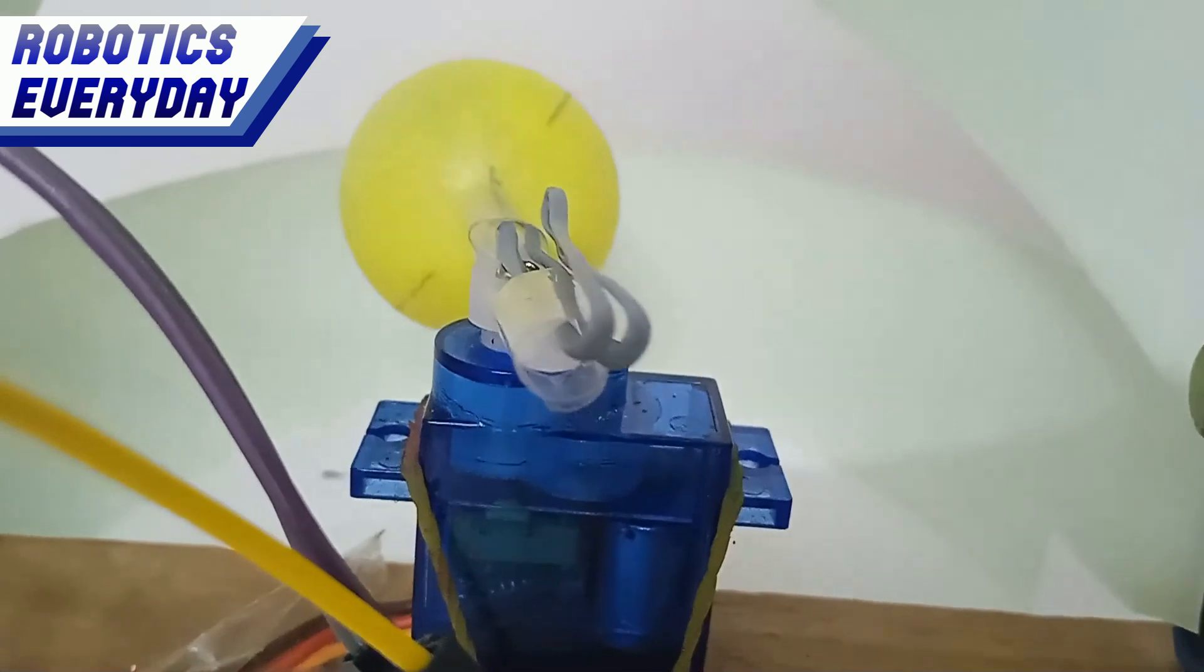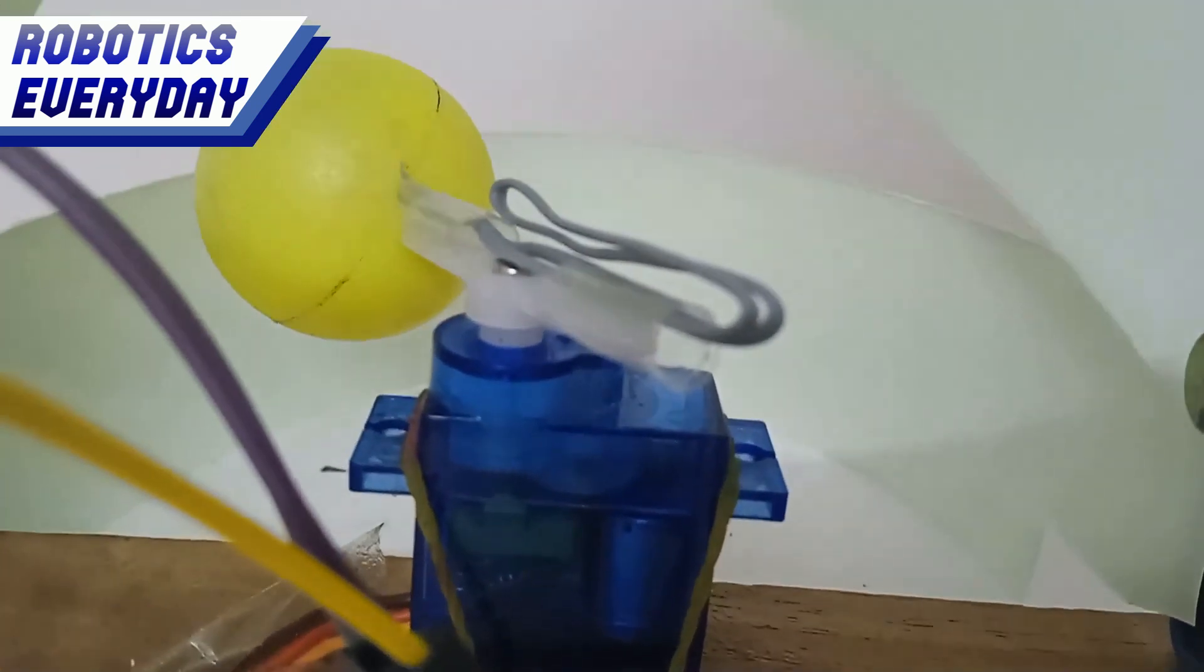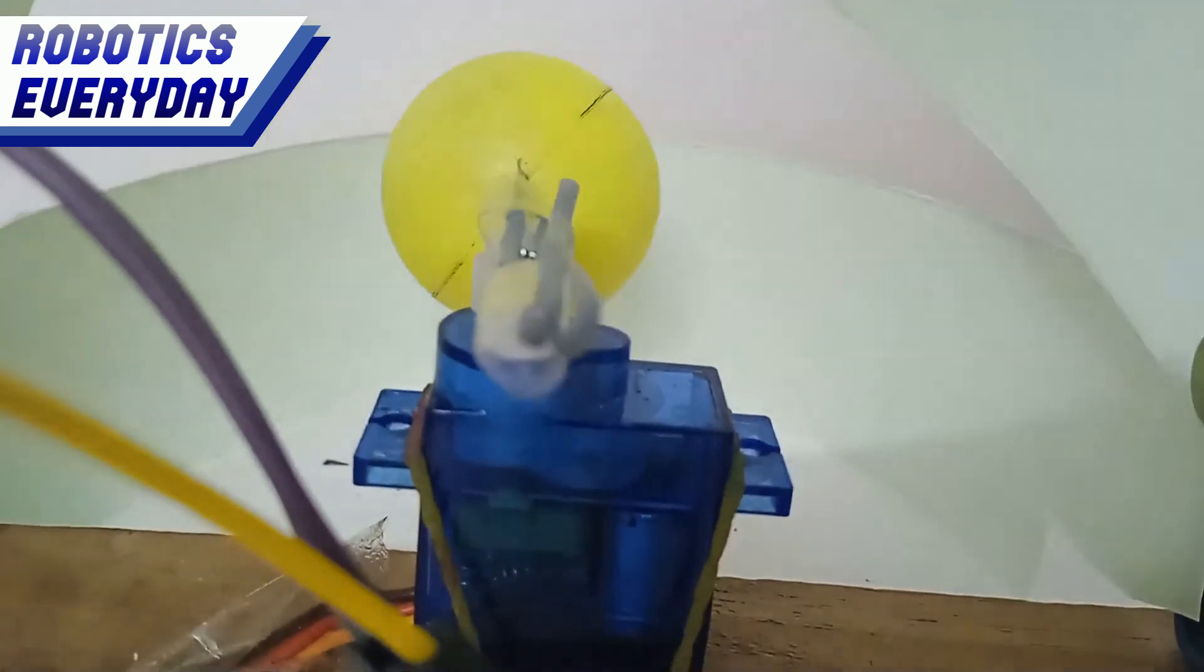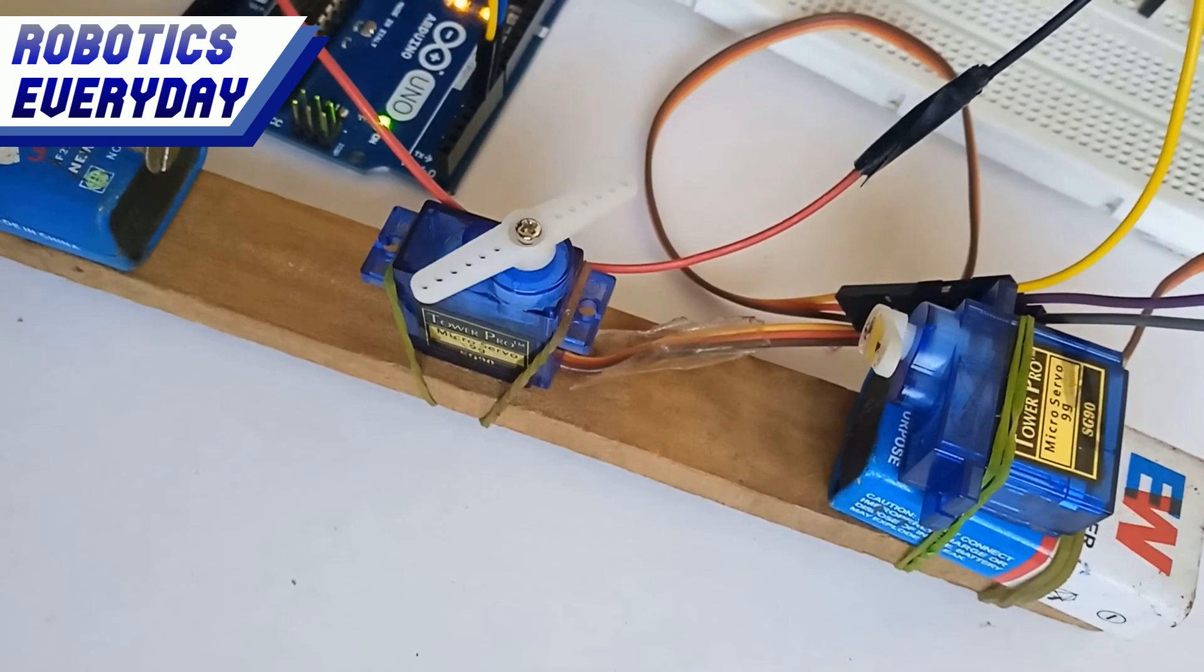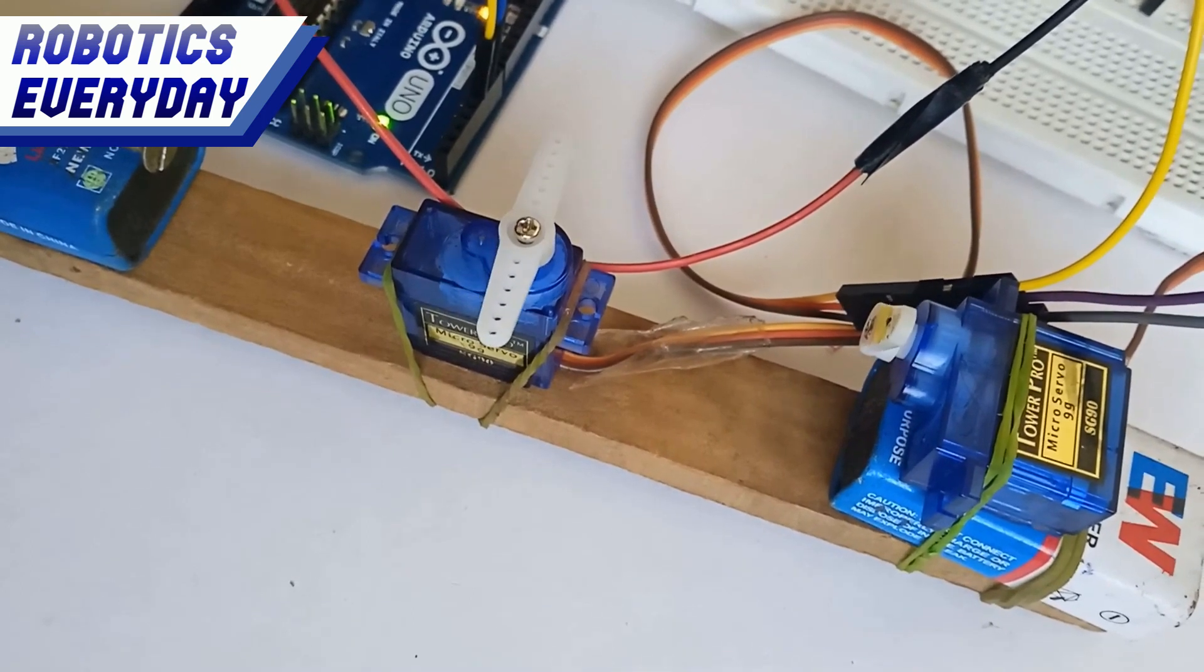This robotic eye setup offers numerous applications and potential for future enhancements. One potential application involves replacing the eyeball with a camera, enabling the robotic eye to capture visual information and transmit it for further analysis or monitoring.